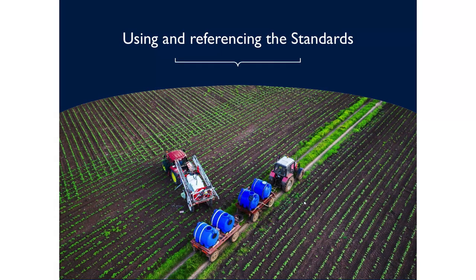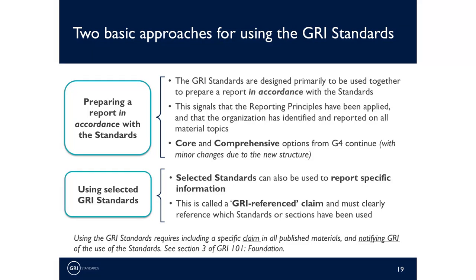The next section outlines the ways the standards can be used and referenced. Like G4, the standards are primarily intended to be used together to prepare a sustainability report in accordance with the standards. Meeting the in-accordance criteria signals that the reporting principles have been applied and that the report provides a full and balanced picture of the organization's material topics, their associated impacts, and how these are managed. Any organization that wants to use the standards to report on the full picture of its impacts is encouraged to follow this approach and to meet the in-accordance criteria.